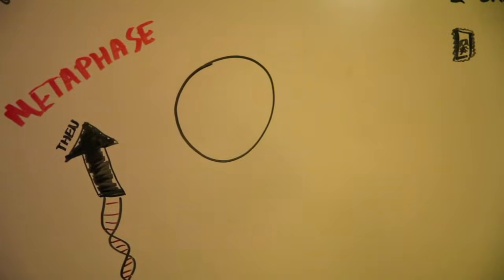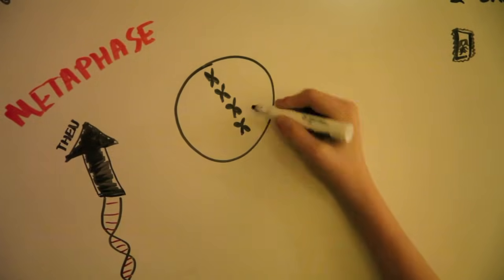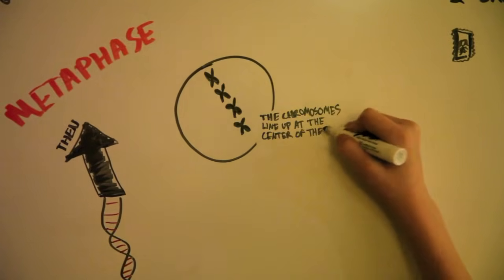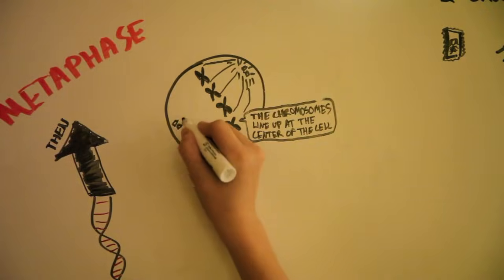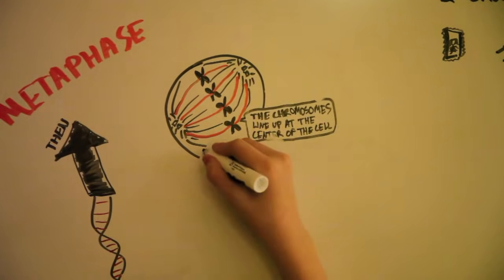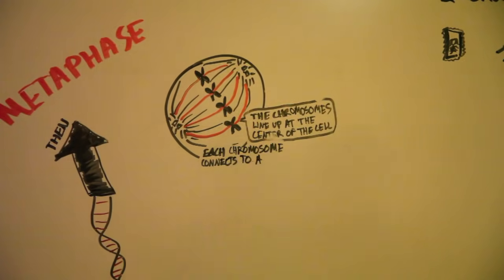Then, in metaphase, the chromosomes line up across the center of the cell. Each chromosome is connected to a spindle fiber at its centromere.